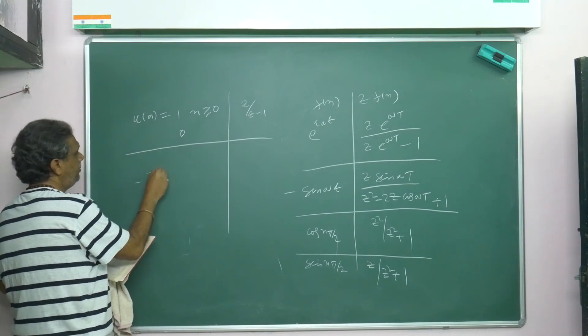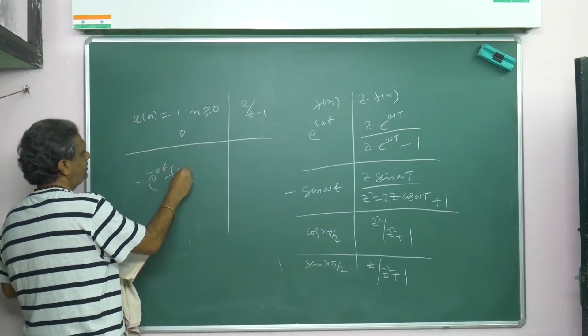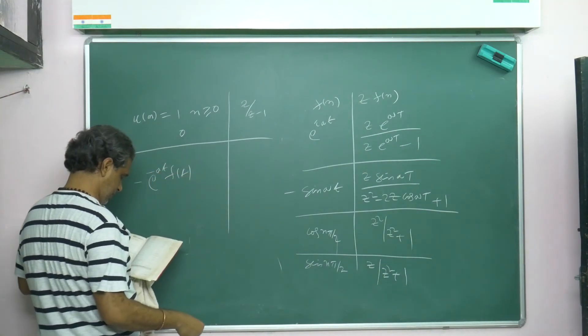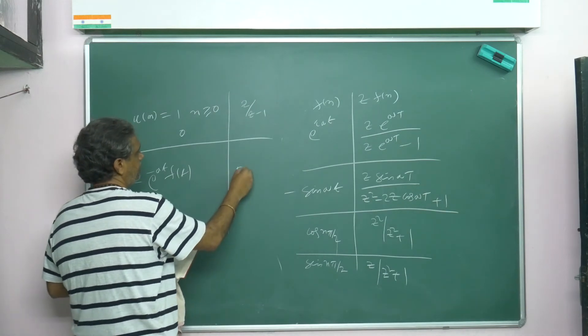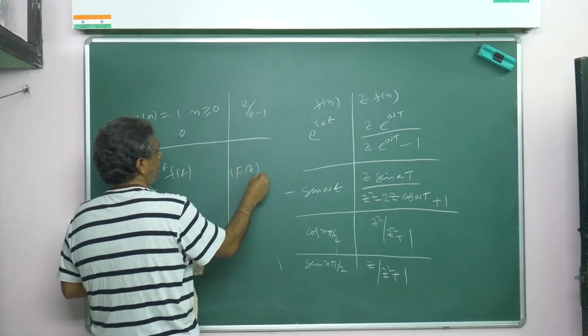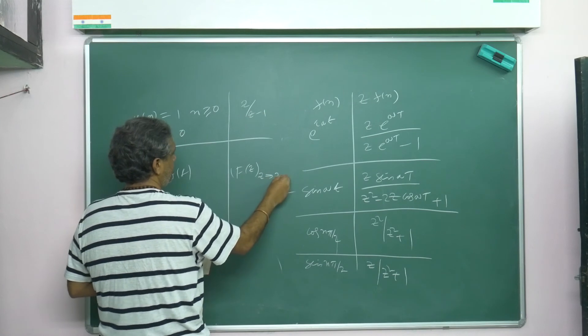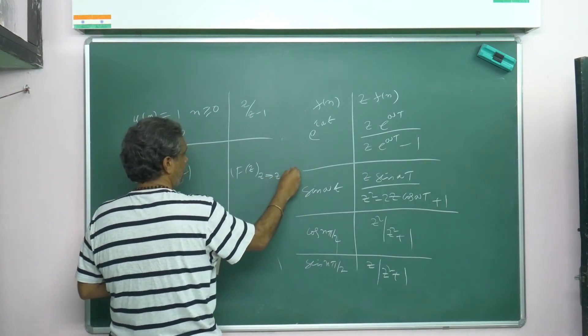Then Z{e to the power minus aT times f(t)}, you can write: take Z{f(z)}, then change z to z times e to the power aT.